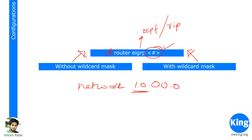If you enter a subnet network ID thinking EIGRP will accept the subnet, it will not. It accepts the command but converts it to classful — 10.0.0.0 for a class A address. If it's class B, it moves to the class B network; if class C, it moves to the whole class C network. That's one way — without the wildcard mask.